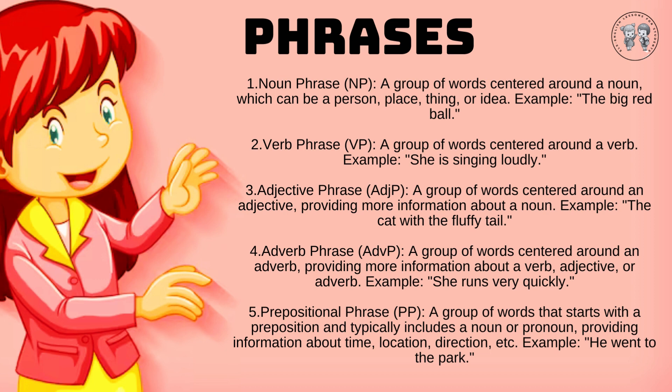4. Adverb phrase (ADVP): A group of words centered around an adverb, providing more information about a verb, adjective, or adverb. Example: She runs very quickly.